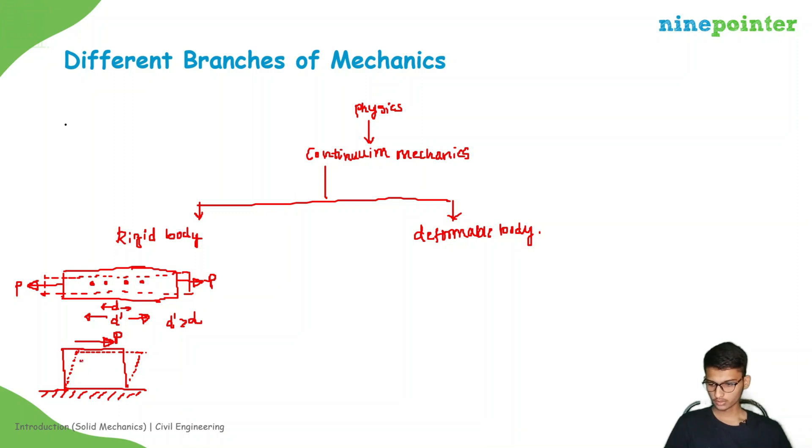Initially if you consider two particles here, then the two particles will go like this. Initially the distance is D. Now the distance is D prime, so again there is change in distance between two particles. So then again we can't call it as a rigid body. This means that the rigid body has no deformations. Deformation means either change in shape or size. In a rigid body there will be no deformation.